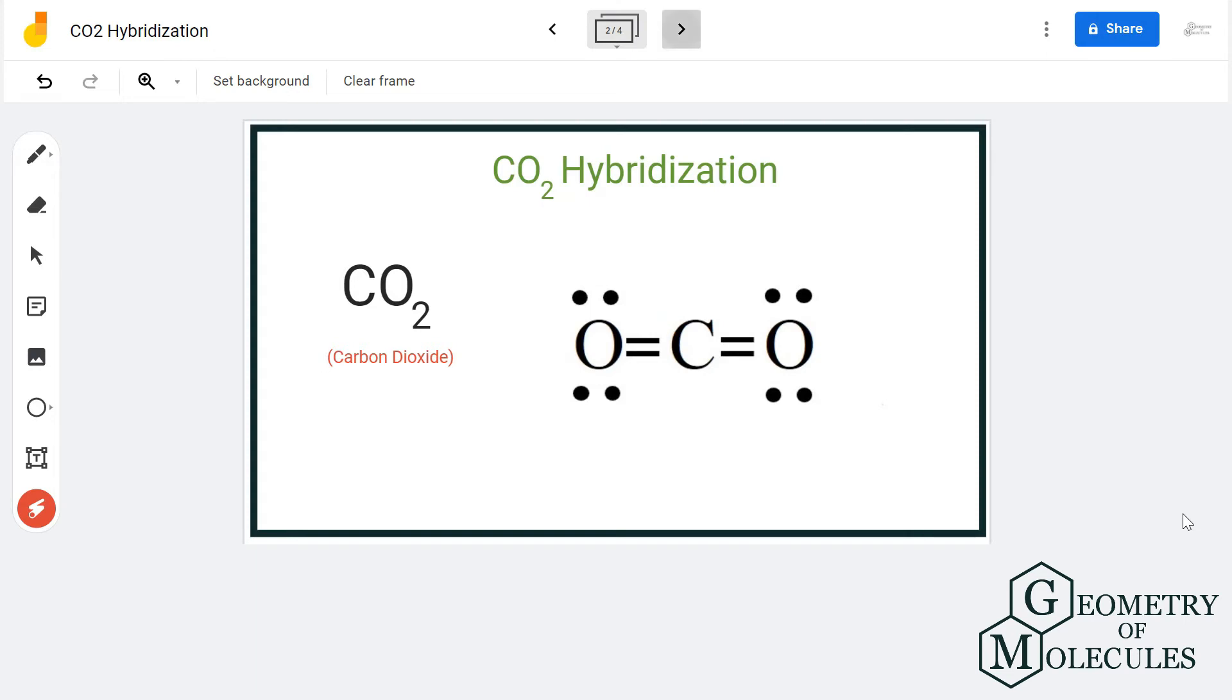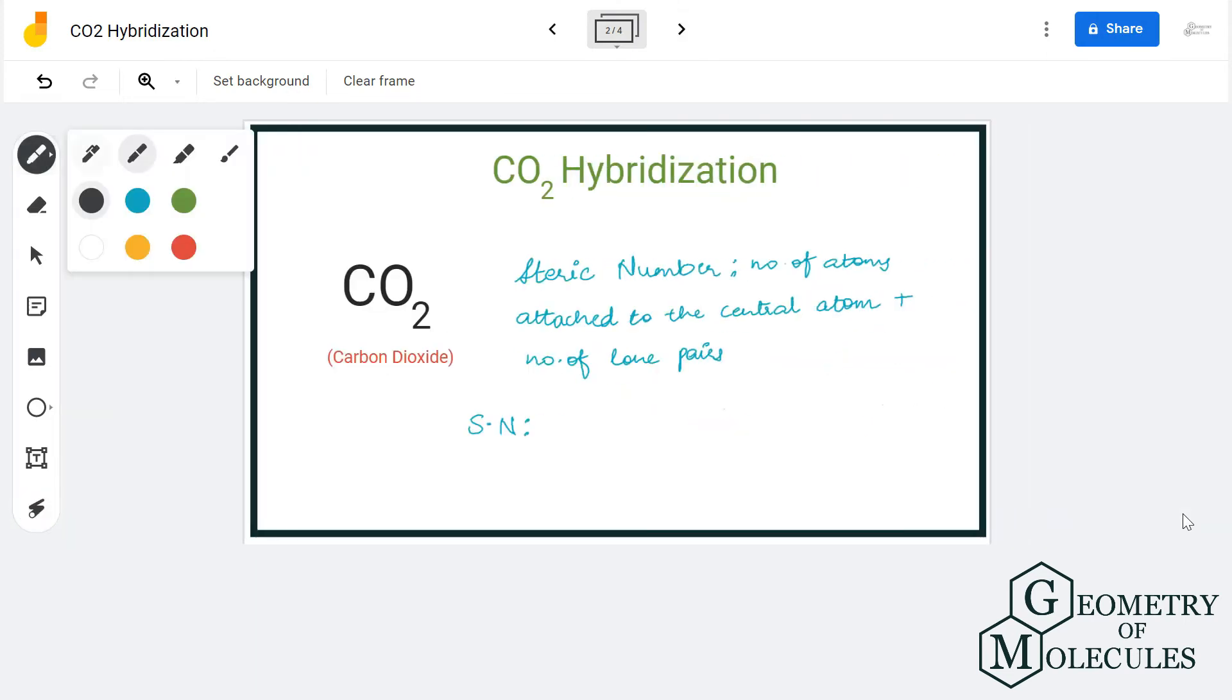So here for finding hybridization, we will look at the formula of steric number which says that we have to count the total number of atoms attached to it plus the number of lone pairs on it.